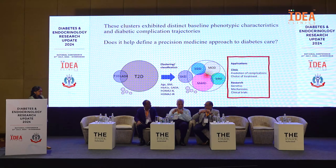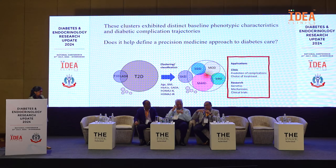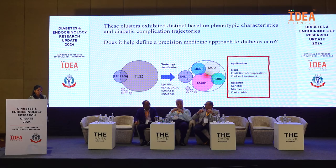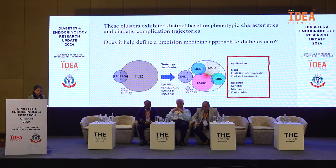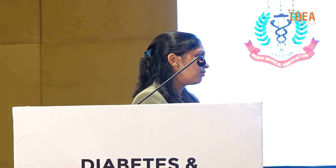We are indeed moving towards precision medicine — classifying patients into these clusters, although we are looking for better clustering tools. We often use these characteristics to understand how to stratify patients. Building on that, Professor P.V. Rao — do you see any benefit in checking indices like HOMA-IR or beta cell function?